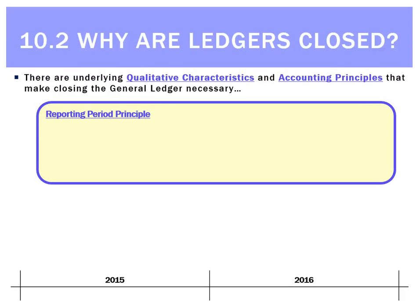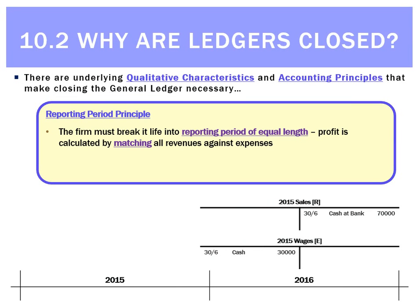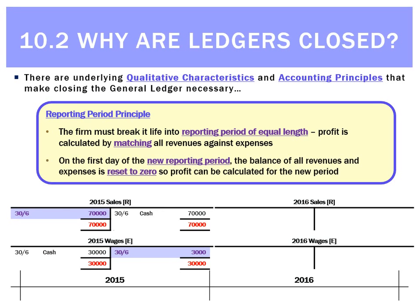An accounting principle that tells us to close ledgers is the reporting period principle. We break the life of the business into periods of equal length, and at the end of each period we match revenues and expenses. For example, in 2015 we have sales of $70,000 and wages of $30,000. We close those down rather than carry them into 2016, determining that profit was $40,000. That leaves blank ledgers for 2016, so we can match 2016 revenues against 2016 expenses.